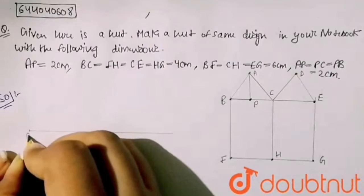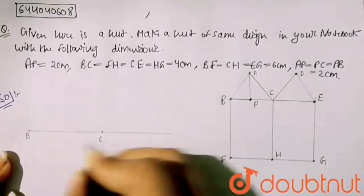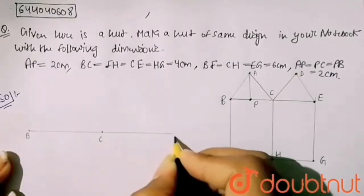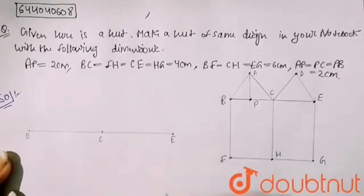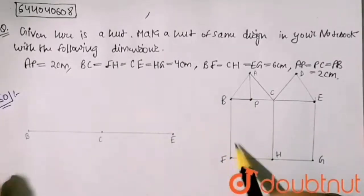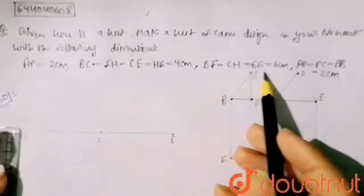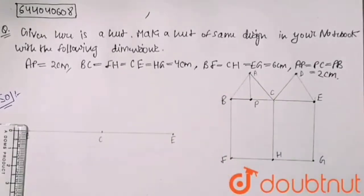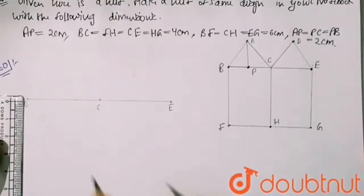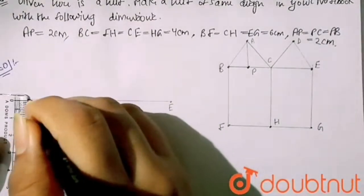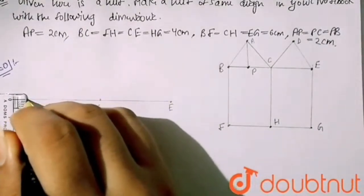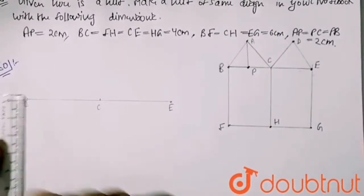Now here, my BF is also given. BF equals 6 cm, so here you have to take a 6 cm straight line from this point - 6 cm, till here. So mark this as F.